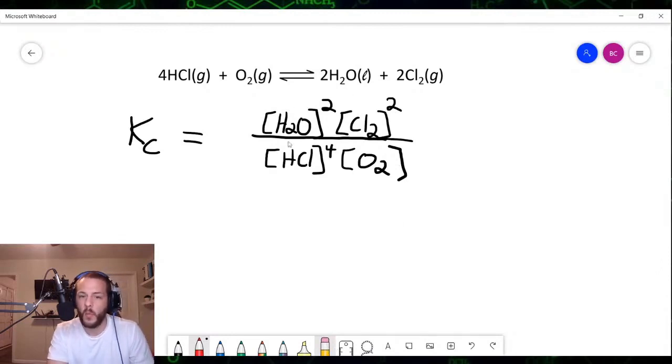So what we're going to do is we're going to take this water term here, and we're going to simply erase it. We are going to remove it from the expression for the equilibrium constant. And so what we arrive at is this, which is correct, where we have the concentration of chlorine squared divided by the concentration of HCl to the fourth power times the concentration of O2. So this is the correct expression for the equilibrium constant.